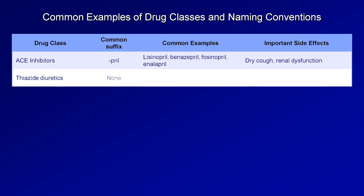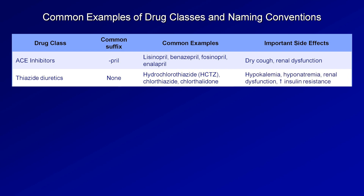Thiazide diuretics have no common suffix, but there are only a few to remember with similar-sounding names: hydrochlorothiazide, chlorothiazide, and chlorthalidone. Side effects include hypokalemia, hyponatremia, renal dysfunction, and a modest increase in insulin resistance — meaning it can make type 2 diabetes just a little bit worse.